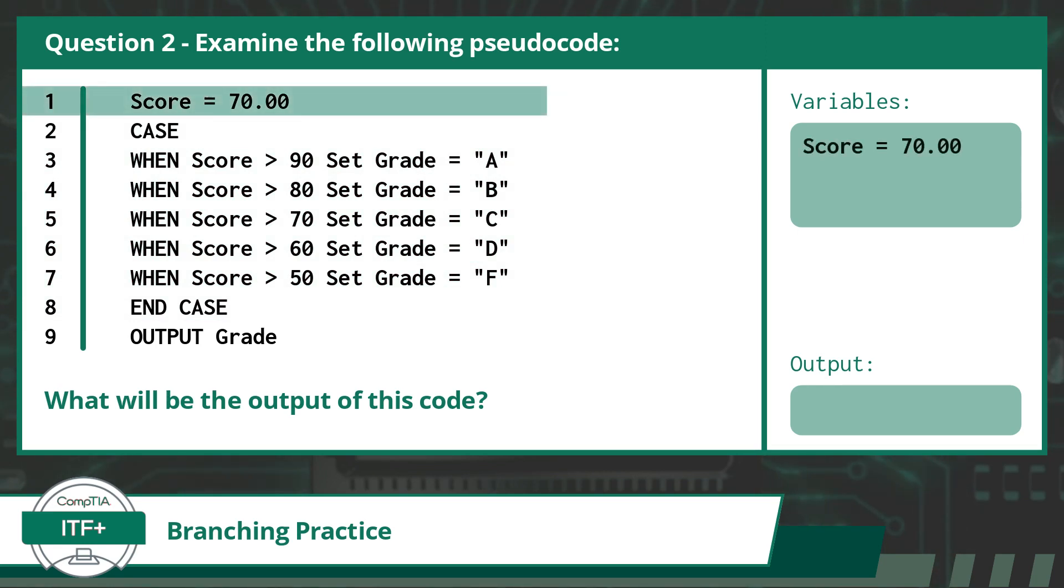In line 1, we have an assignment statement. This statement declares a variable with the identifier score and assigns it the value of 70.00. Line 2, case, opens our list of possible branches. From here we go branch by branch or line by line until we find a conditional statement that evaluates to true.